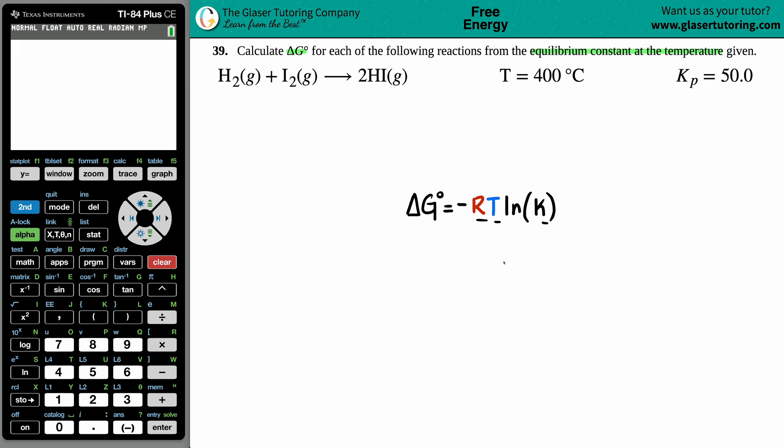The R value is a constant number. The R value here is 8.314, and this is joules per mole times Kelvin. That's the unit for the R value, so R is always just the standard value 8.314.